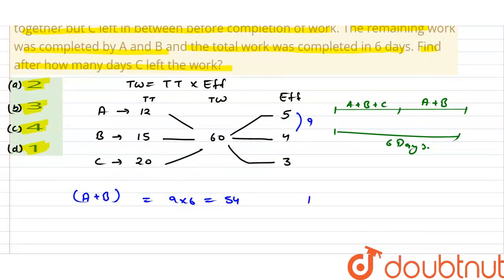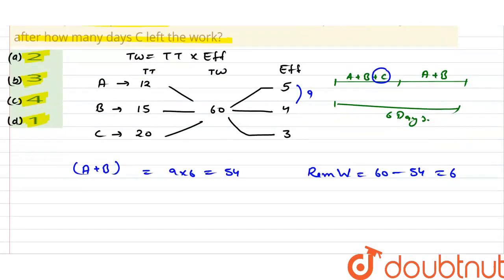54 उन्होंने किया है, और remaining कितना रह गया? Remaining work रह गया 60 minus 54, that is 6। अब वो जो 6 है, वो definitely C ने किया है। तो C ने 6 काम किया है। C's time = work done by C ÷ C की efficiency = 6 ÷ 3 = 2। तो C ने सिर्फ 2 दिन काम किया है।